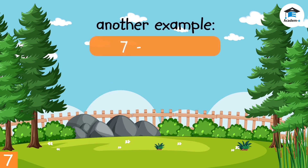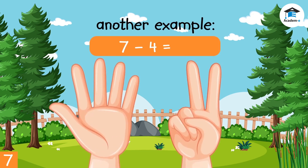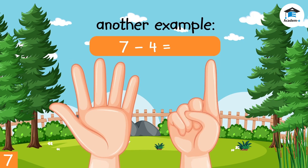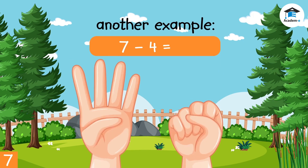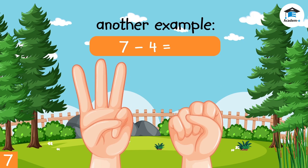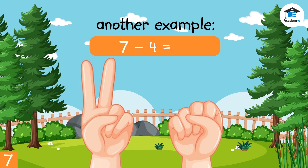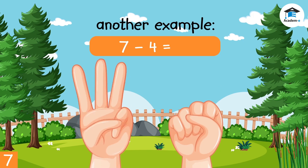Third example: 7 minus 4. Put out 7 fingers. How many fingers do we need to put down? 4. Very good. 1, 2, 3, 4. How many fingers are left? 1, 2, 3. The answer is 3. 7 minus 4 is equal to 3.